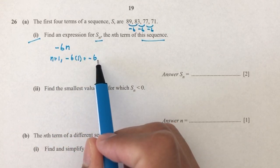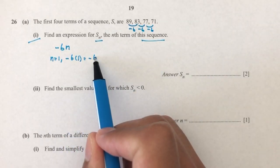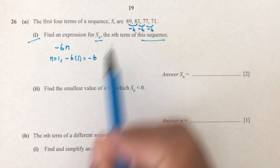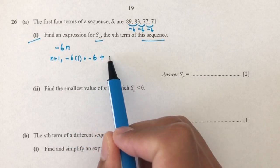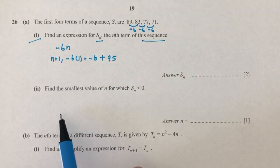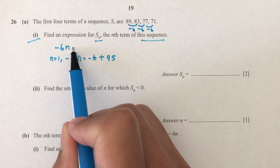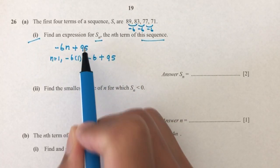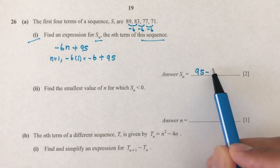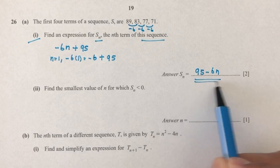But the real answer is 89. How can you change minus 6 to 89? You have to add 95. Same way, you have to add 95 to this, so your nth term will be 95 minus 6n.